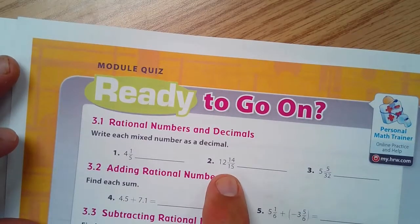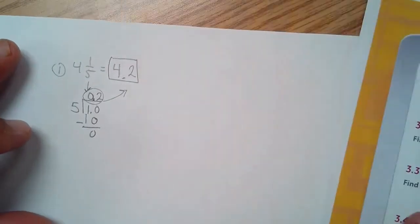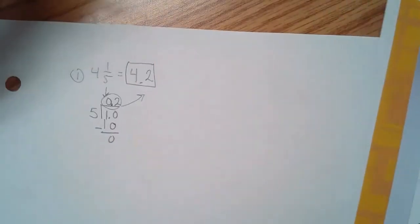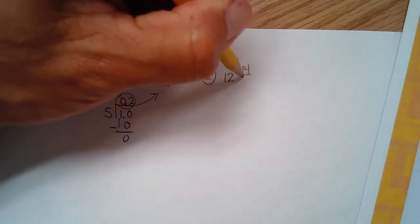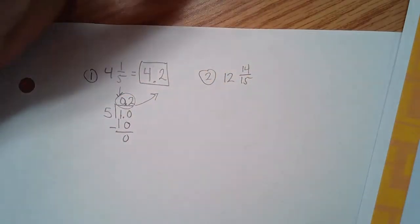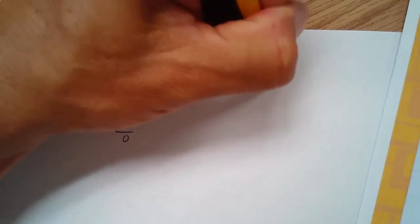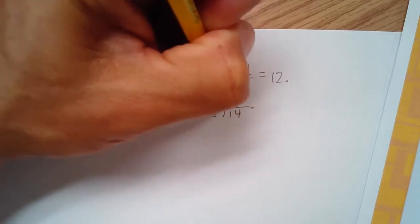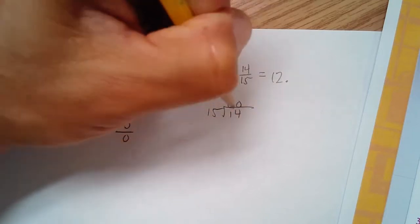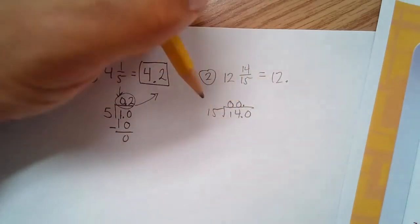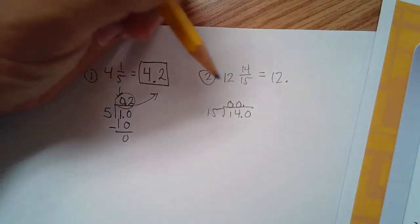Number two, 12 and 14/15. Okay, I'll do number two over here. 12 point. 15 going into 14. Well, 15 isn't going to go into one, and it's not going to go into 14. But it will go into a decimal point, 140, and it will go in probably nine times.